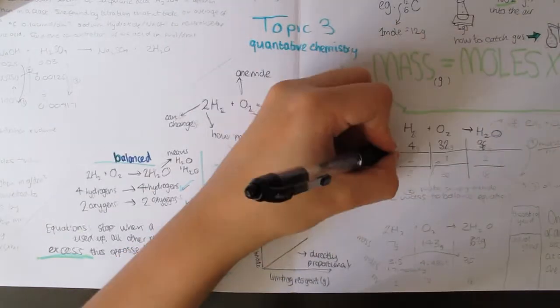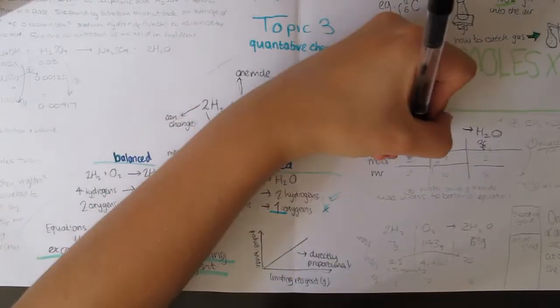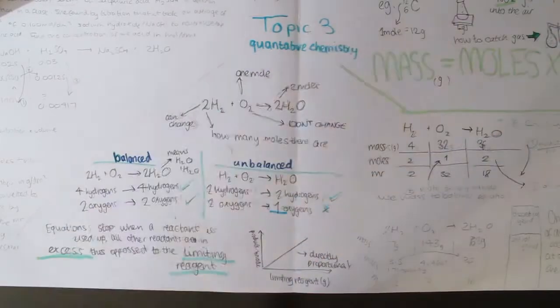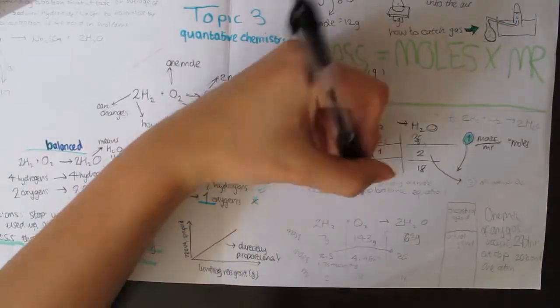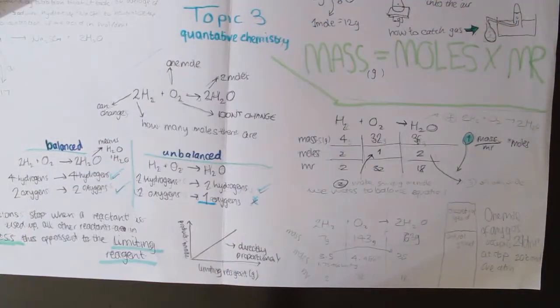Equations stop when one reactant is used up and all the other reactants are in excess. They are usually this way to make sure the limiting reactant is used up, and so the amount of limiting reactant which is used up is directly proportional to how much product is eventually made.